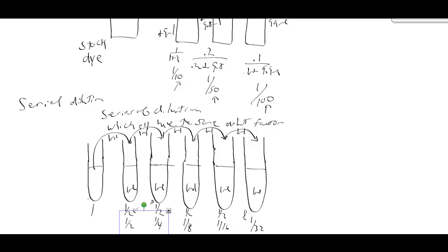So we go 1 half, 1 fourth, 1 eighth, then 1 sixteenth, and then 1 32nd. So by doing these sets of serial dilution, we've gone from our undiluted sample here in the first tube to a 1 to 32 dilution. So the concentration of what we're diluting our stock here in tube 1 is 1 32nd.